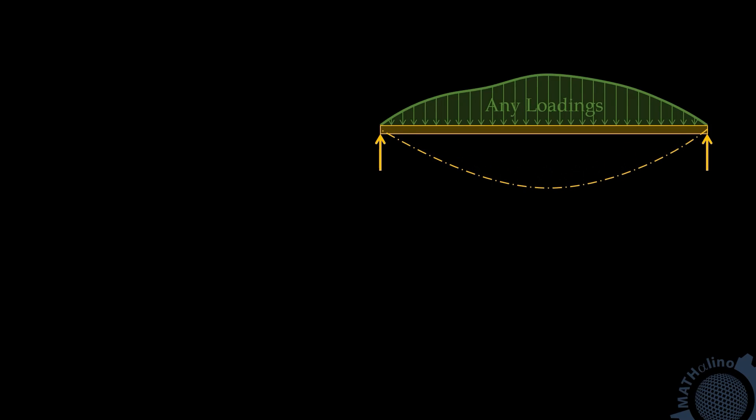We have this beam, and due to its loadings it will deflect. The deflection is represented by its elastic curve. Let us take two points on the beam, say A and B, and draw tangent lines to points A and B. Theta A and theta B represent the slope of the tangents at points A and B.